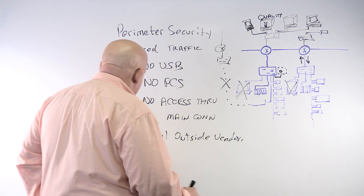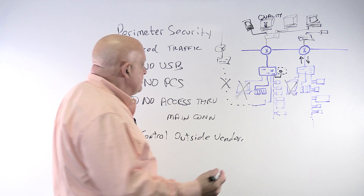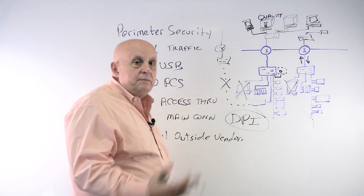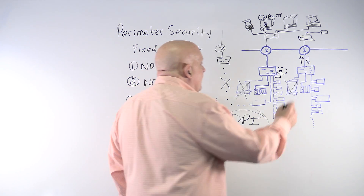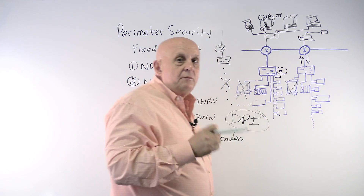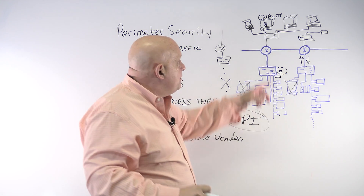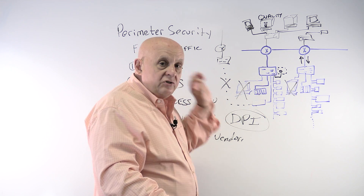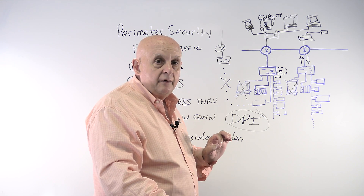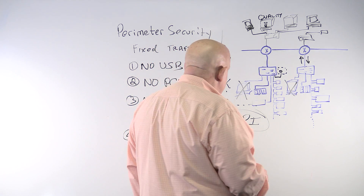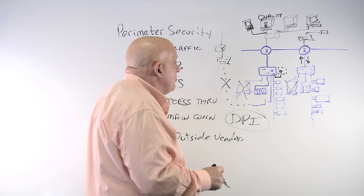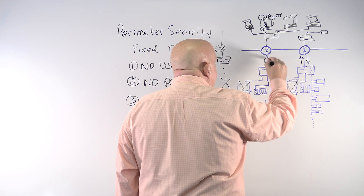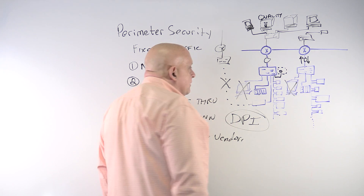The solution we're looking for is called DPI — Deep Packet Inspection. In real time, DPI opens and inspects every single message coming through, and those messages have to be messages that we expect. So we need a device here that has a deep packet inspection engine.